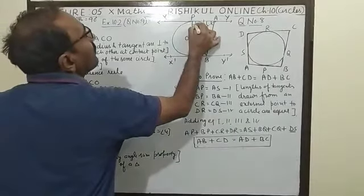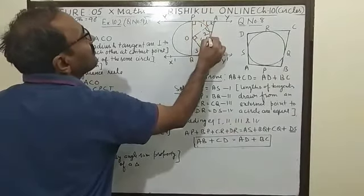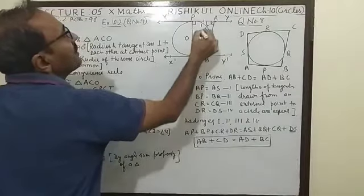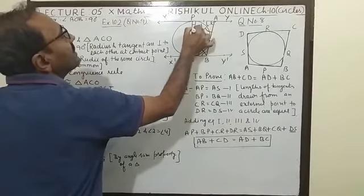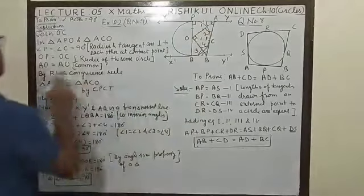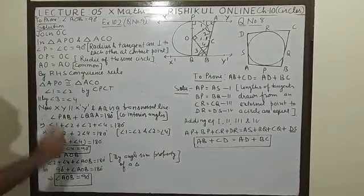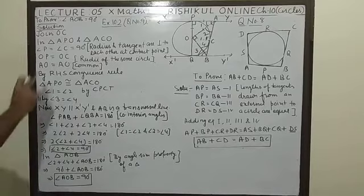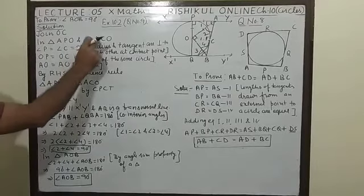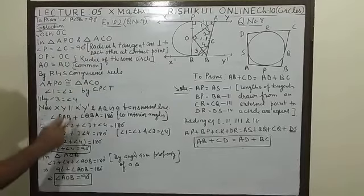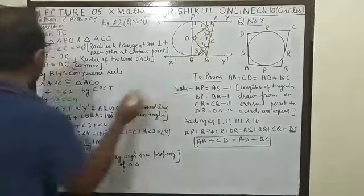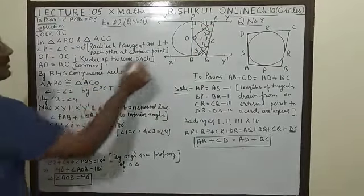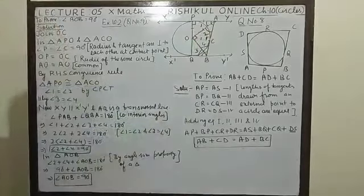By which condition? R for right angle, then H for hypotenuse common and then one side, OP equal to OC. So by RHS congruence rule, triangle APO congruence to triangle ACO. You know very well, angle 1 equal to 2. Angle A is equal to A. Angle 1 equal to 2 by CPCT.